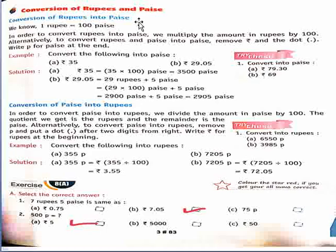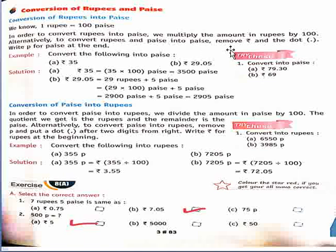Page: conversion of rupees and paise. In this exercise we convert rupees and paise. Firstly, conversion of rupees into paise. We know that one rupee is equal to hundred paise. We multiply the amount in rupees by hundred. Then to convert rupees and paise into paise, remove the rupees symbol, put a dot, and write P for paise at the end.